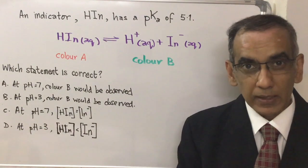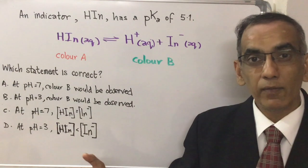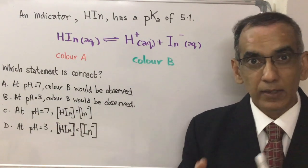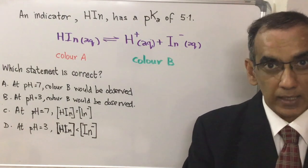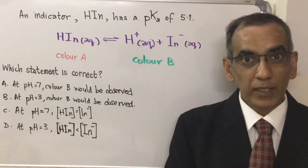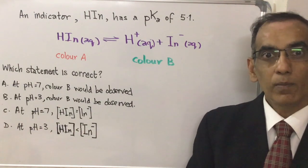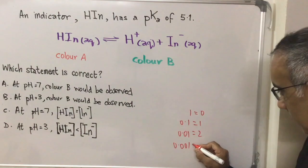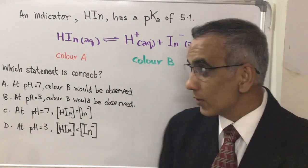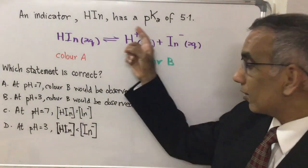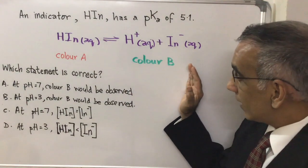A pH of 3 means that you have more H+ ions in solution than you have OH- ions. This knowledge comes from an understanding of the pH scale. So a pH of 3 means that the H+ ion concentration would be 0.01. This concentration is quite high.